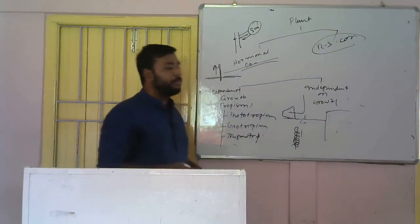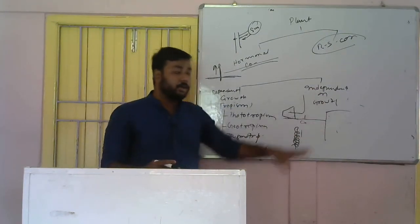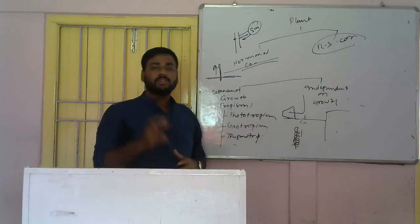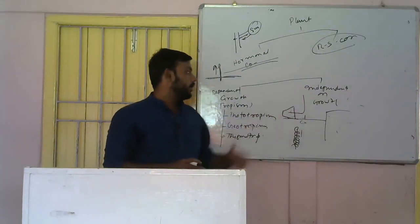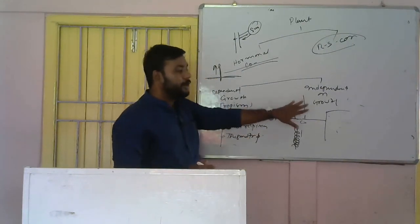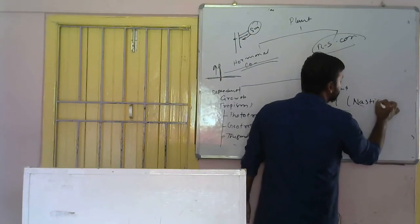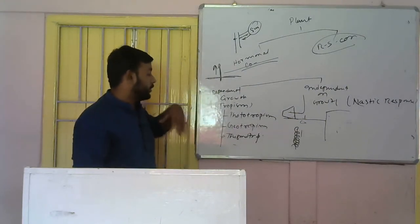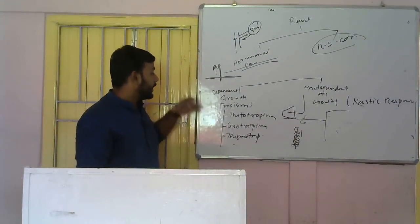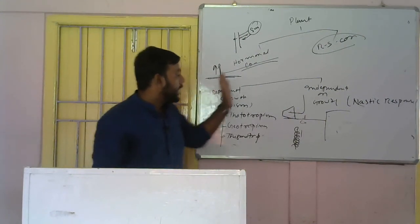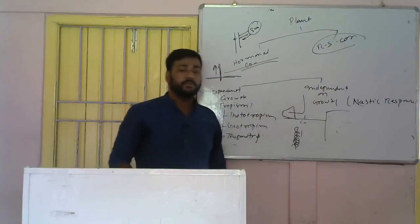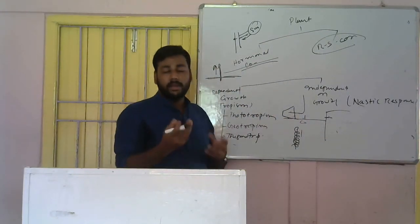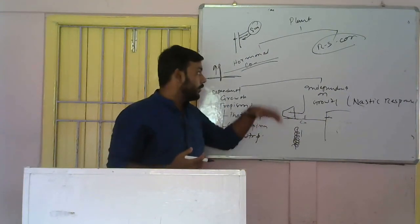Movements independent of growth are known as nasty responses. A classic example is the mimosa plant — the touch-me-not plant. When you touch it, it moves but doesn't show any growth. Similarly, the opening of a flower shows movement but doesn't show growth — this is also an example of a nasty response. So, movements dependent on growth are tropic responses (tropism), and movements independent of growth are nasty responses.